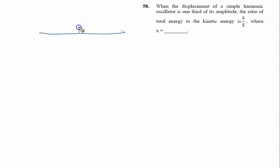When the displacement of a simple harmonic oscillator is one third of its amplitude, where amplitude is A and displacement is x given by A/3, then the ratio of the total energy to the kinetic energy is x/8 and we have to calculate the value of x.